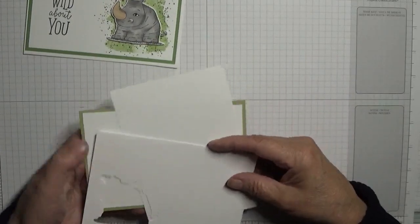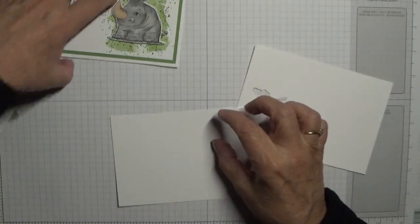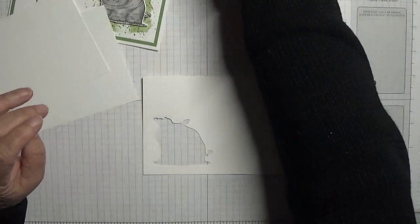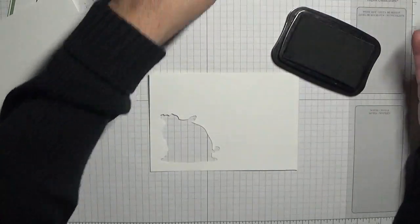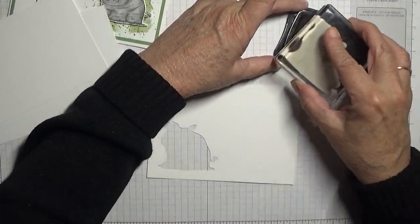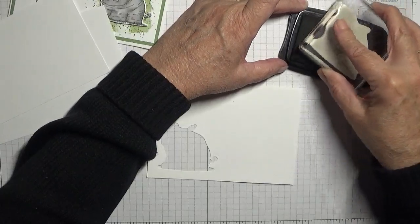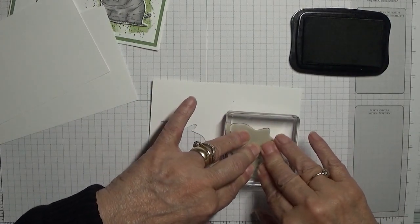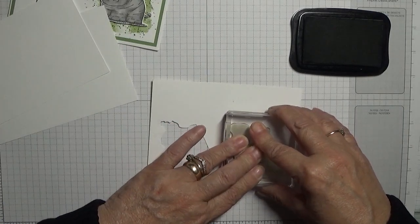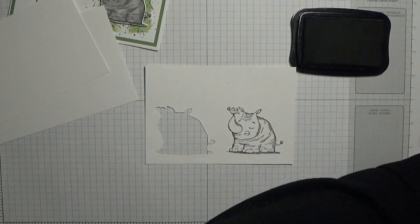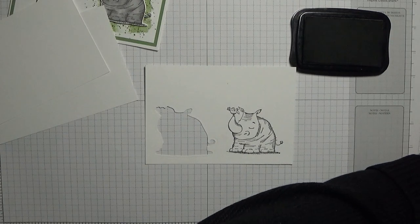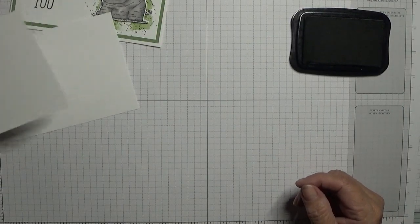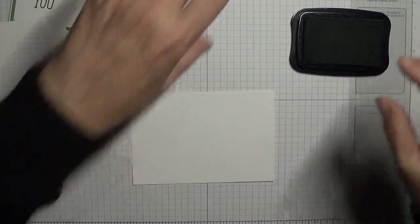With my scrap paper, first of all with Memento Black we will stamp the rhino. Just stamping down, let the ink transfer. And there we have it. Clean the stamp off.